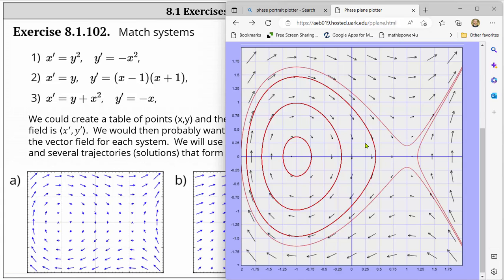Again analyzing the phase portrait. The phase portrait is made up of the vector field and the trajectories. We can see we have critical points at negative one comma zero and one comma zero which is where both x prime and y prime are equal to zero. The system given by number two matches slope field a.